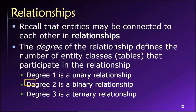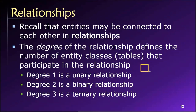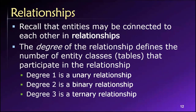Degree two, or binary, relationships are by far the most common type of relationship we're going to have in our database designs. This is a relationship between two tables. Anytime you see two tables or entities connected with a relationship line, that is a binary relationship — a connection between two tables, degree two or binary.